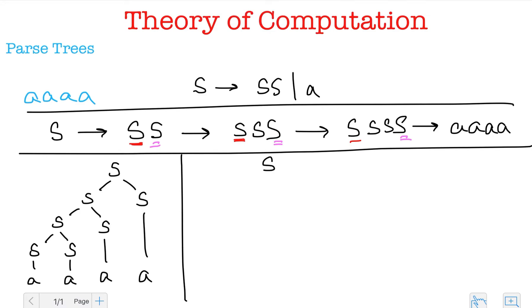So the rightmost derivation tree that I'll get would be something like this. S splits into S and S. This S splits into S and S and this S splits into S and S and finally all of them go to A.